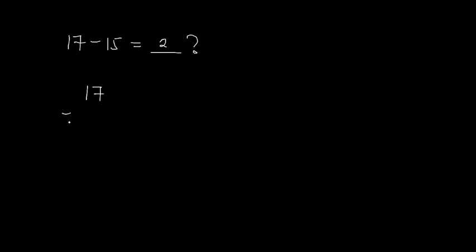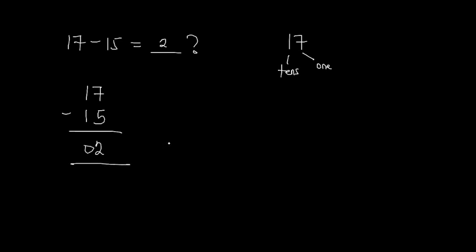Let's look at the column subtraction of these numbers to see how we get 2. We have 17, we bring our subtraction sign and then we bring 15. For the two digits, this is your ones and this is your tens. When you want to do the subtraction you subtract the ones first, then move on to the tens — and if there are three digits you move on to the hundreds as well. So over here we have 7 minus 5, which gives us 2. Now we move to the tens: 1 minus 1 gives us 0. So our final answer is 2.